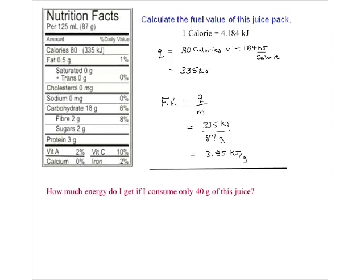If you're on a strict diet counting calories or kilojoules, you may not be allowed to drink the entire juice pack. So suppose you only drank about 40 grams. Now that we have the fuel value of 3.85 kJ/g, we know exactly how many kilojoules we'd get for 40 grams - it's an easy calculation.